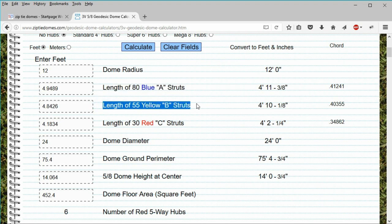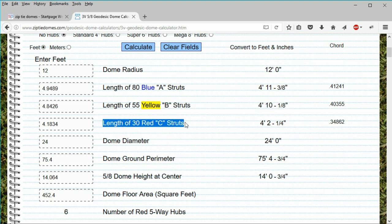The 55 yellow struts are slightly shorter than the blue struts. The 30 red struts are the shortest struts here and on every other calculator on our website.